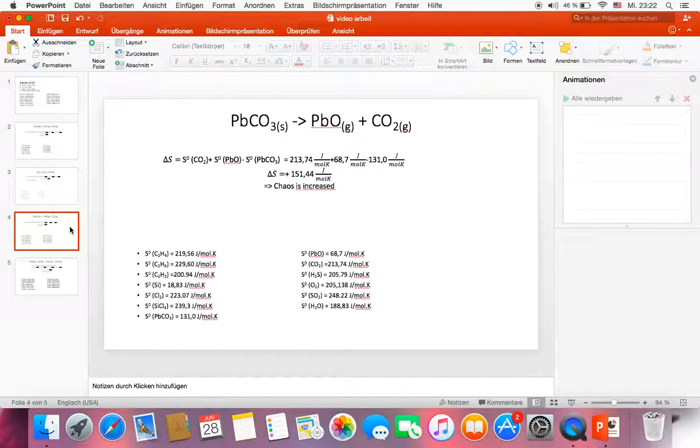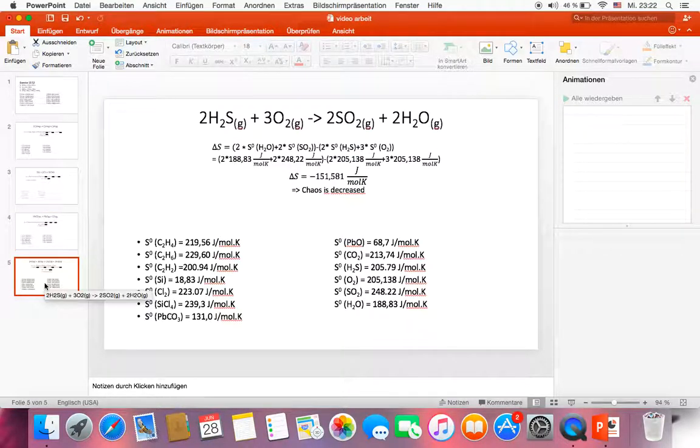Now we move to the last reaction, reaction d. Delta S of reaction d is equal to two times entropy S of water plus two times entropy S of sulfur dioxide minus two times entropy S of hydrogen sulfide and minus three times entropy S of oxygen.